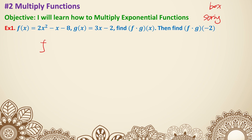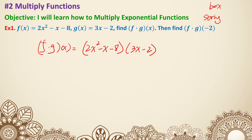f times g of x is the same as the first function, 2x squared minus x minus 8, multiplied with the second function, 3x minus 2. So we have the first term that needs to multiply with the second parenthesis — that needs to go together with 3x and the negative 2, which is going to be 6x cubed minus 4x squared.